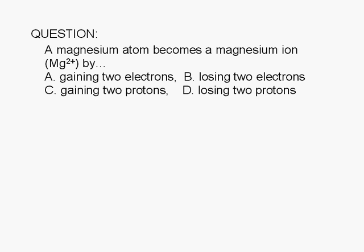A magnesium atom becomes a magnesium ion (Mg²⁺) by: A, gaining two electrons; B, losing two electrons; C, gaining two protons; or D, losing two protons.